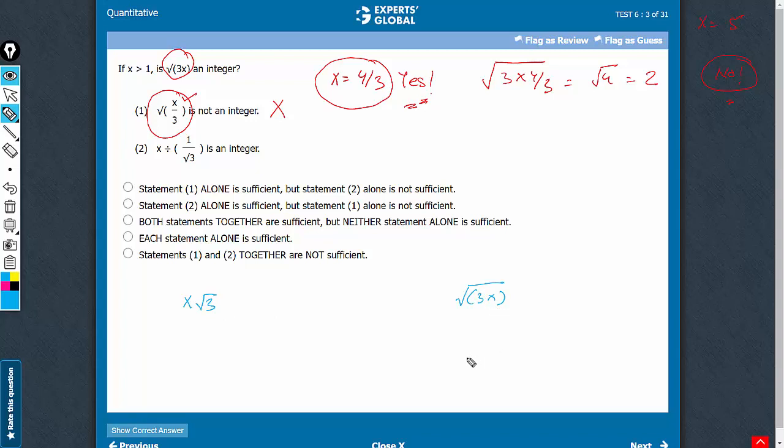So let's consider 3x here. See, 3x can be written as √3 times x√3. And we know that x√3 is an integer.